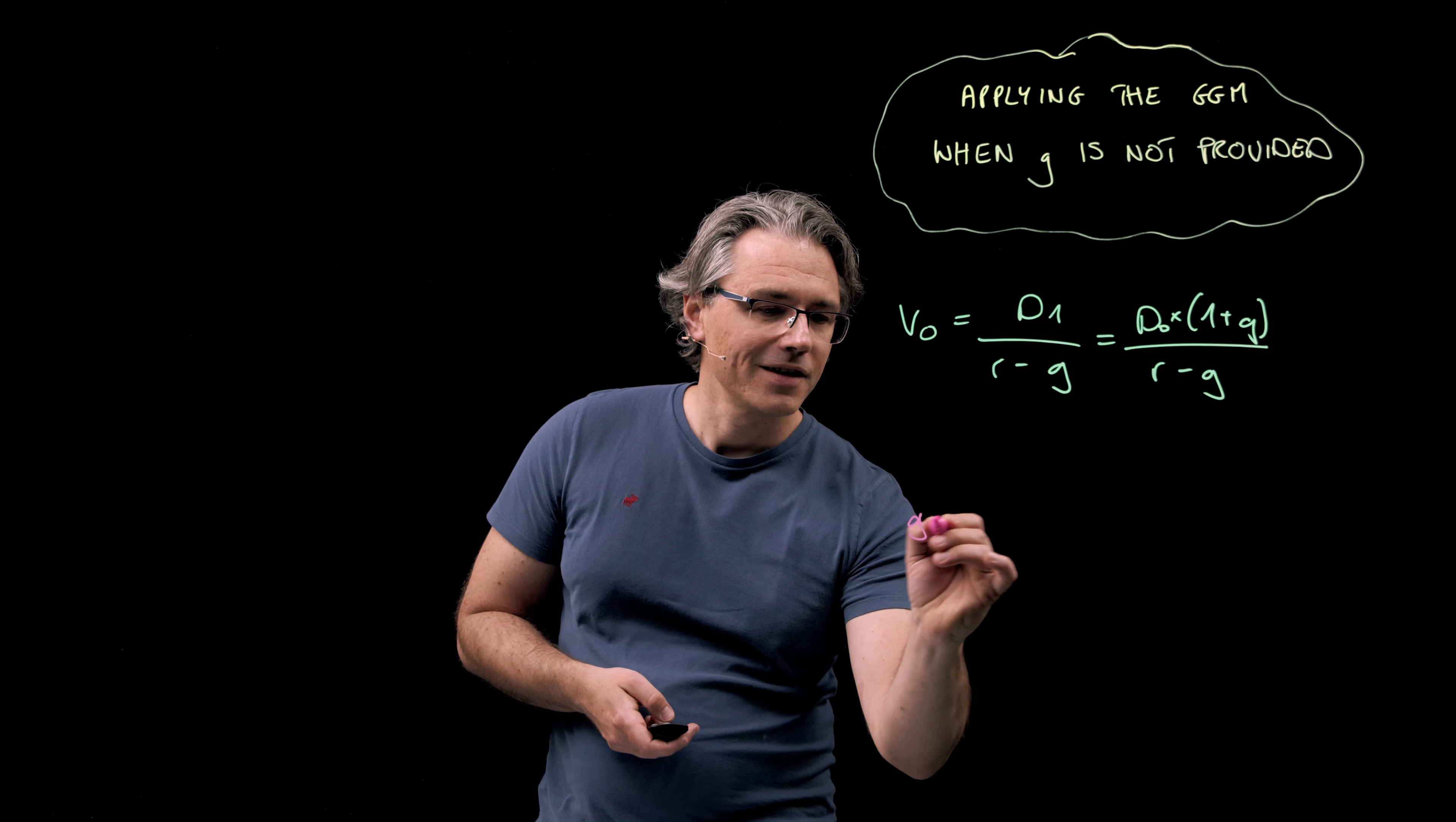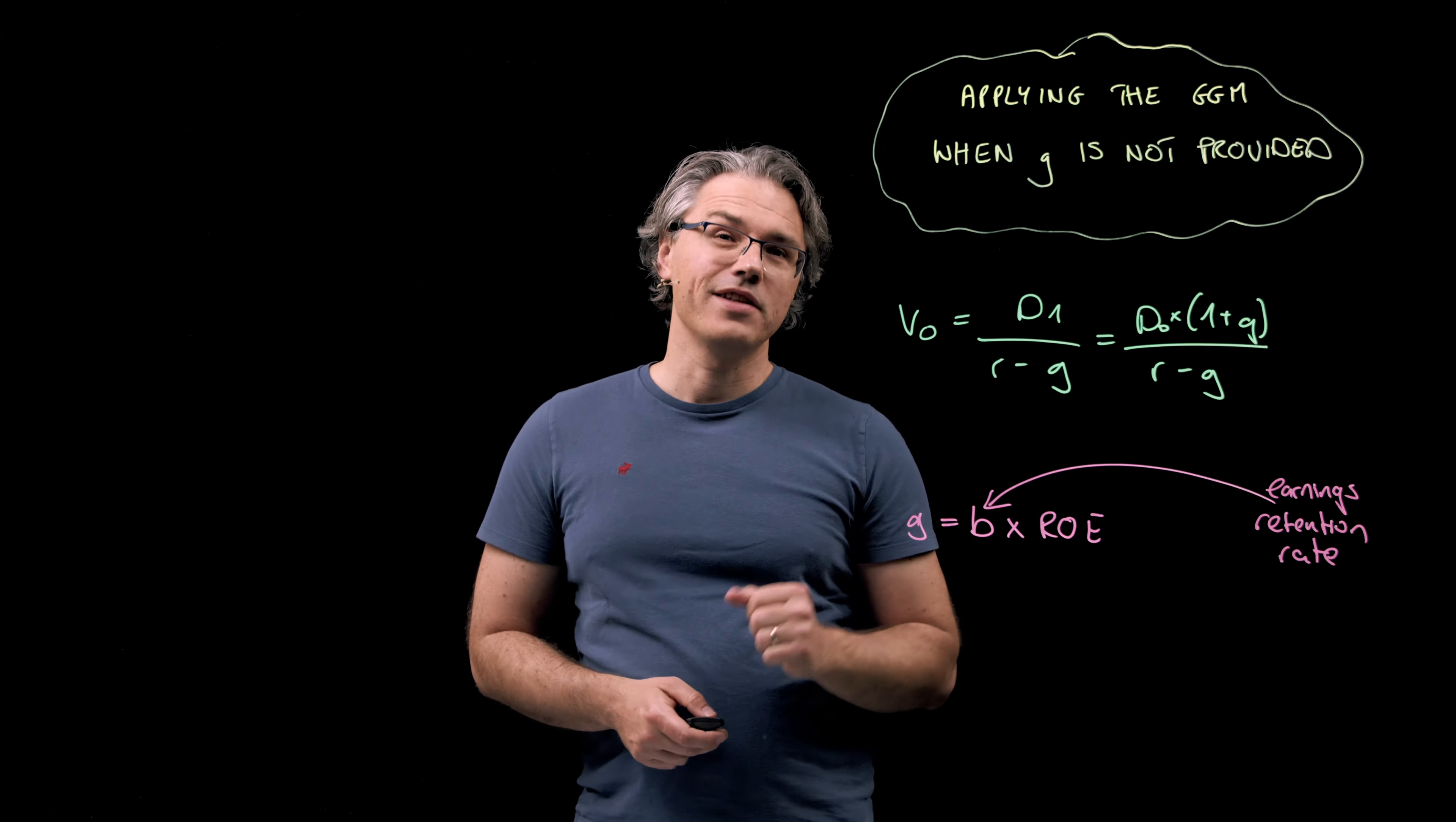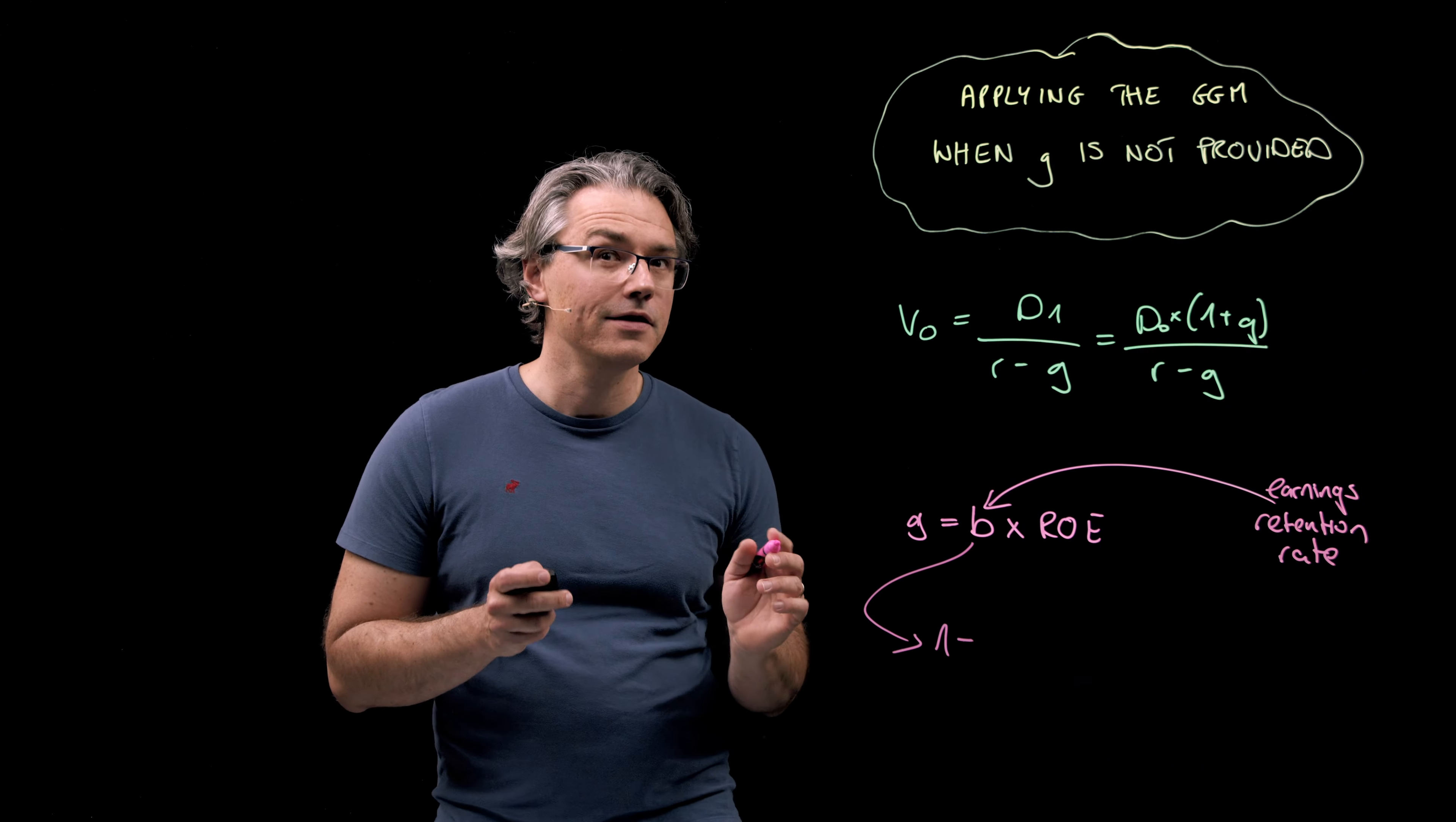G equals B times ROE, where B is the earnings retention rate and ROE is naturally the return on equity. The earnings retention rate represents the portion of earnings which the company retains or keeps as opposed to paying them out to shareholders in the form of a dividend. So we can rewrite this as equal to one minus the dividend payout ratio.